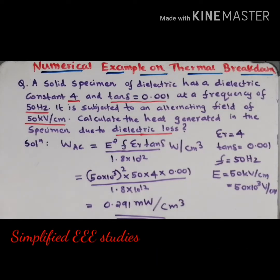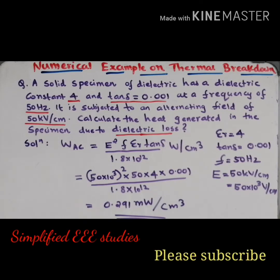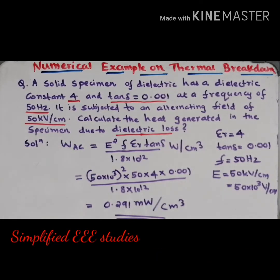I hope you understood how to solve this problem — it's very simple. You have to use the WAC equation: heat generated due to AC field = E² × F × εr × tan(δ) / (1.8 × 10¹²). All the values are directly given in the question — substitute and you get approximately 0.291 milliwatts per centimeter cube.